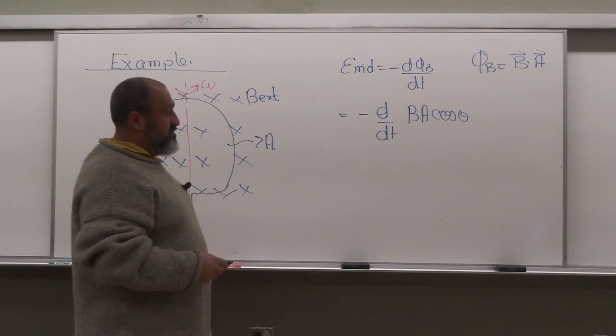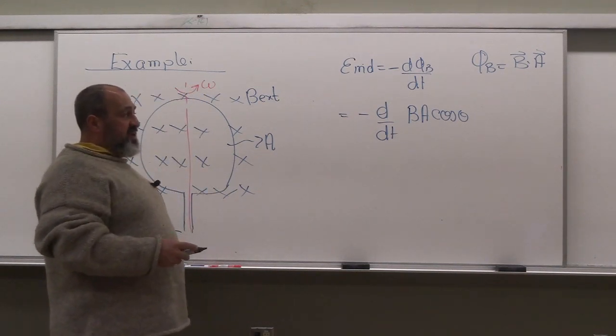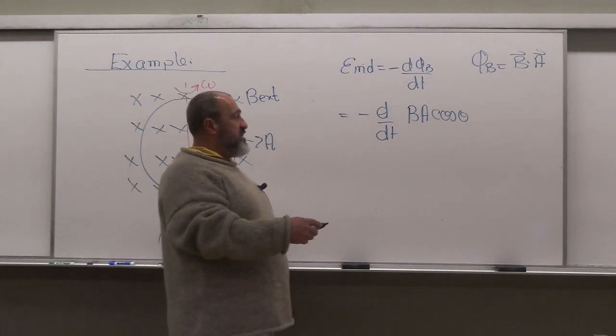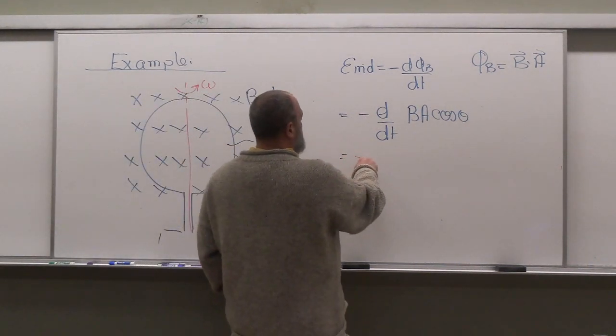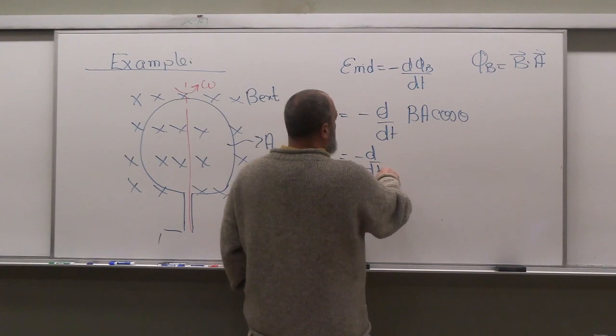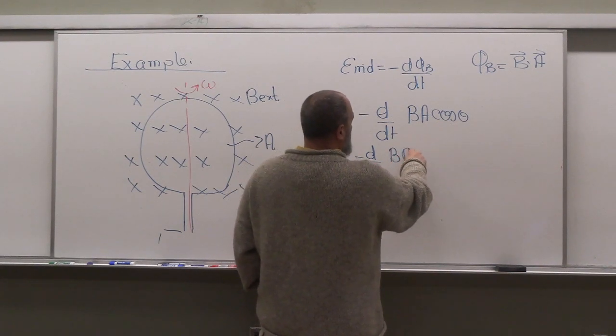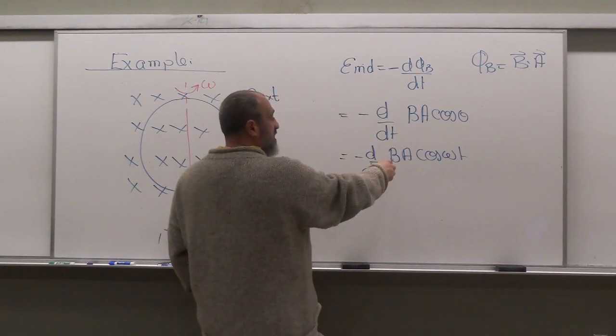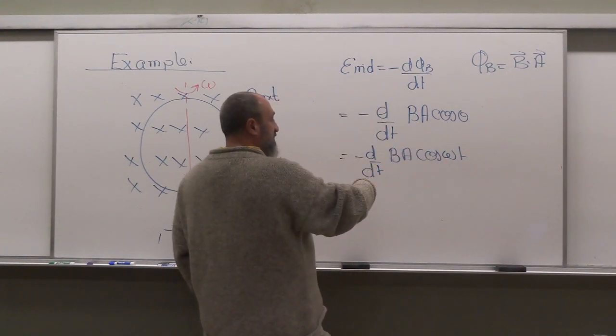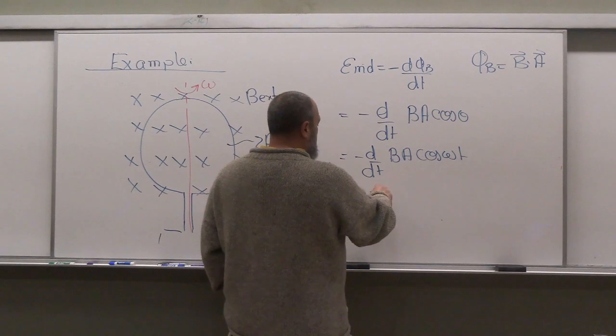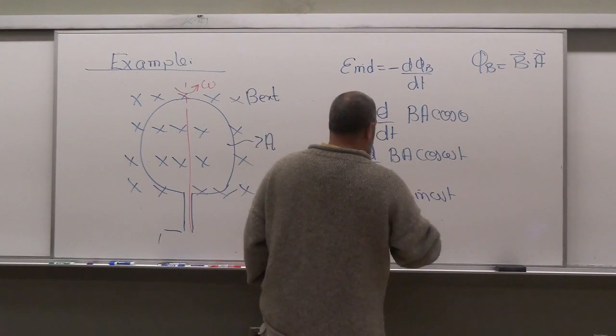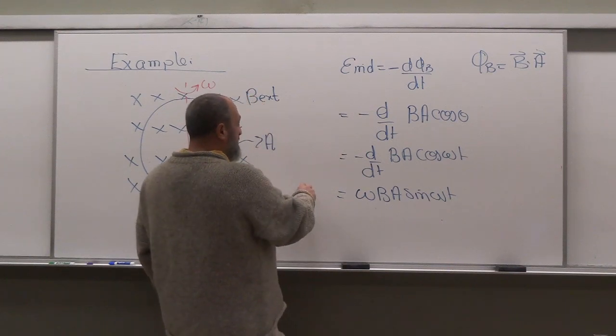So the only thing that is changing with time is theta. And theta is equal to, as this loop spins, theta is equal to omega t. So that's equal to negative d by dt of bA cos omega t. And that gives me, d by dt is omega sine minus. So this becomes omega B A sine omega t. We're not being very picky with the signs right now, but epsilon induced looks like this.